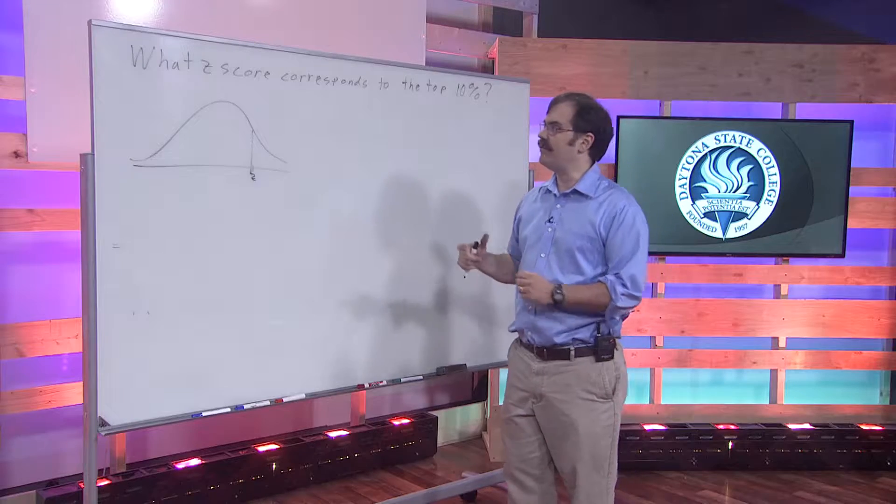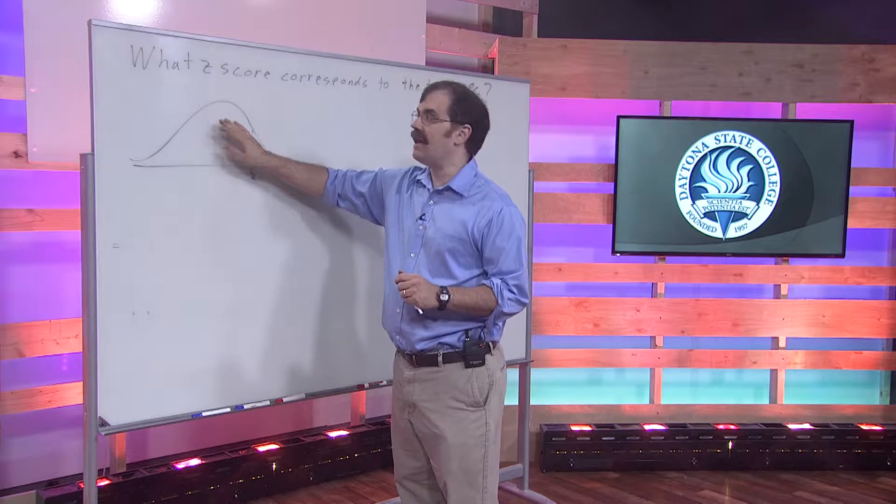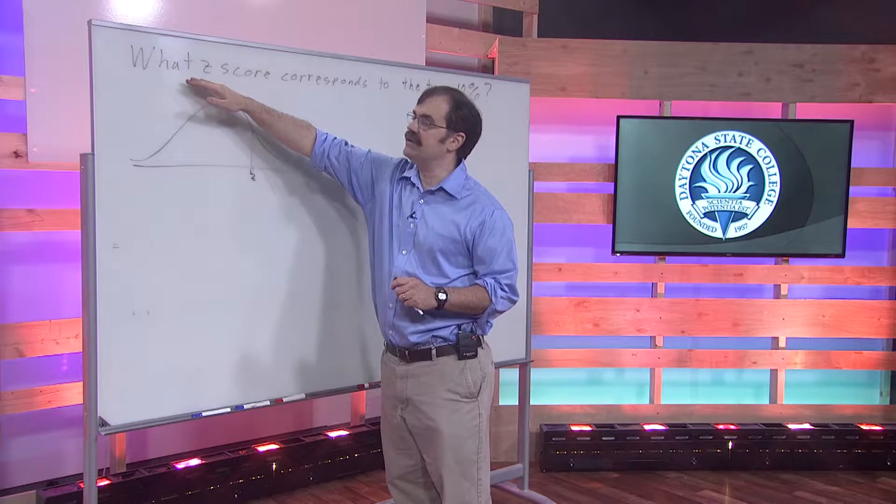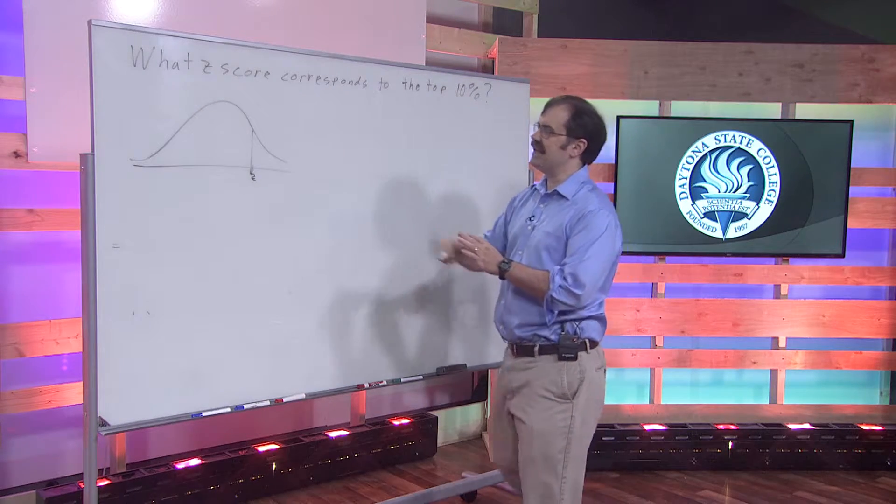So now we have a different type of question. In the last one, we talked about having an area to the left. Here, we're going to be asking a question that says, what z-score corresponds to the top 10%? In other words,